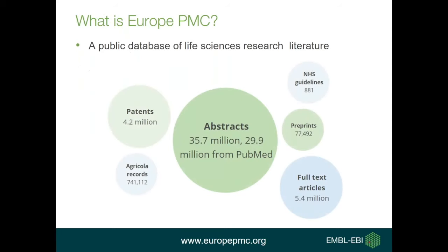What is EuropeMC? EuropeMC is a public database of life science research literature containing more than 35 million abstracts, most of which come from PubMed — around 30 million. In addition, we have other types of data like patents, agricultural records, NHS guidelines, and especially recently we are starting to add preprints. We have almost 80,000 preprints right now and the numbers are going up. We also have more than 5 million full text articles, out of which more than 1.2 million are open access.